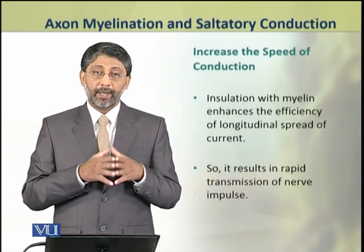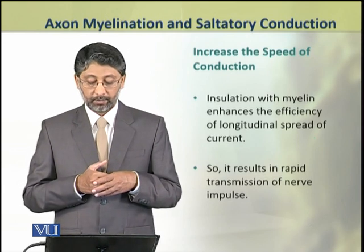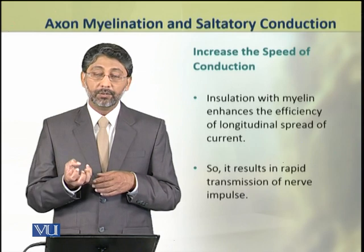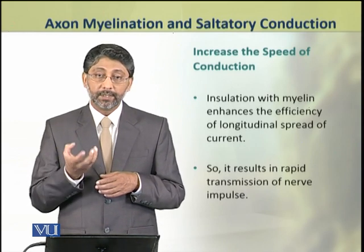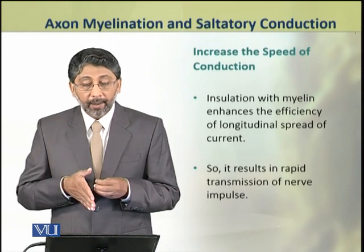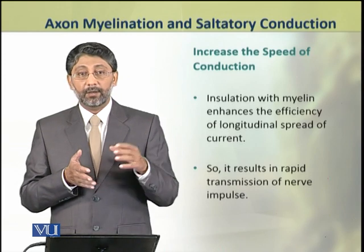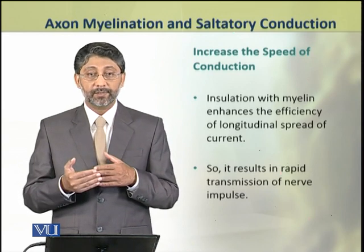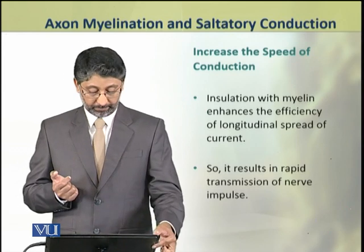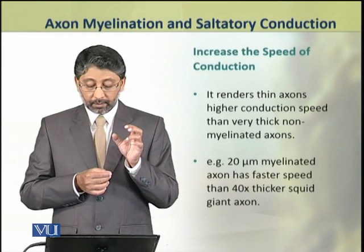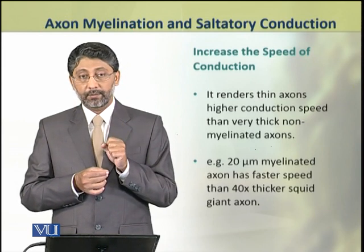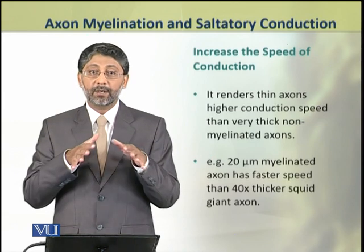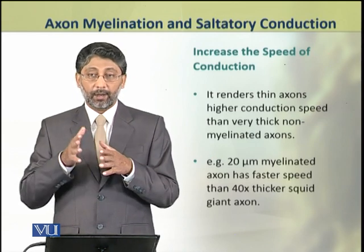The second function of myelin sheath is to increase the speed of conduction. Insulation with myelin provides the efficiency of longitudinal spread of current, which increases the speed of nerve impulse. This increase in speed due to myelin sheath is much greater compared to simply increasing the diameter of the axon, as myelin increases the axon's length constant.